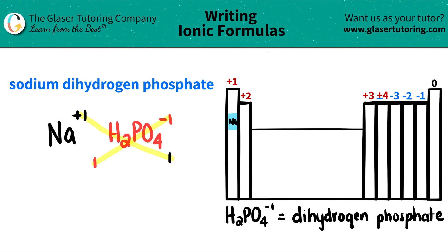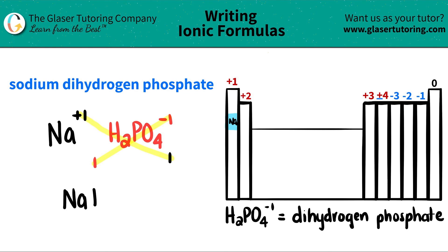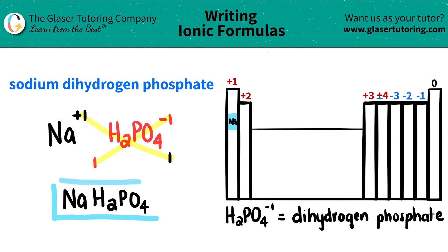Now we're ready to write it out. I have sodium — I only need one of them, so I don't have to write the one. And since I only need one dihydrogen phosphate, I don't need parentheses here. So I'm just going to write it out as H2PO4. Sodium dihydrogen phosphate is NaH2PO4.